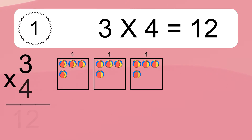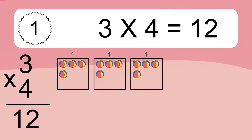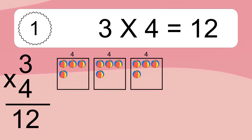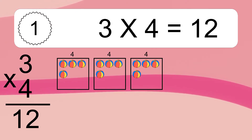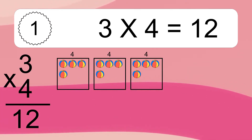3 times 4 equals 12. We have 3 boxes, and each box has 4 colorful balls inside. If you count all the balls in all the boxes together, you will have 3 times 4 balls. This equals 12 balls.